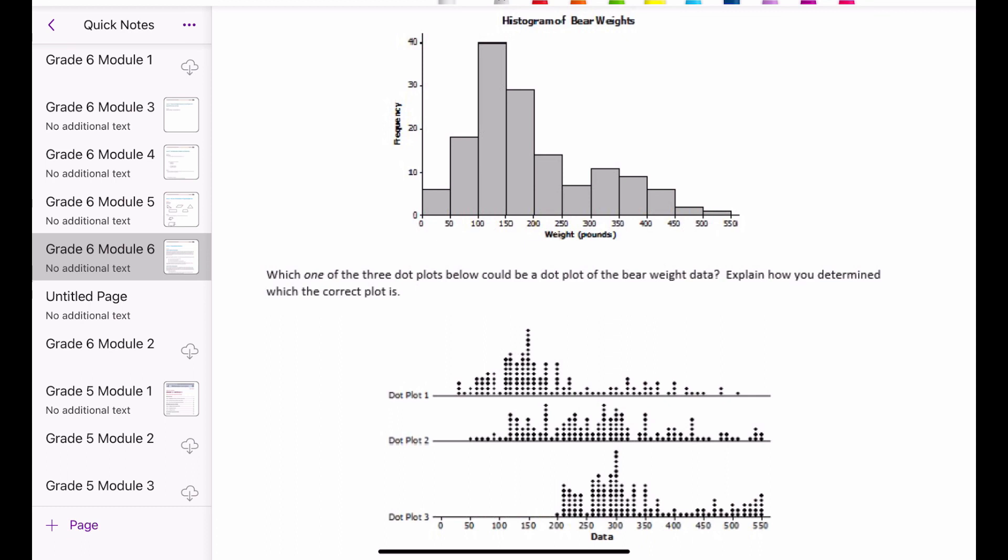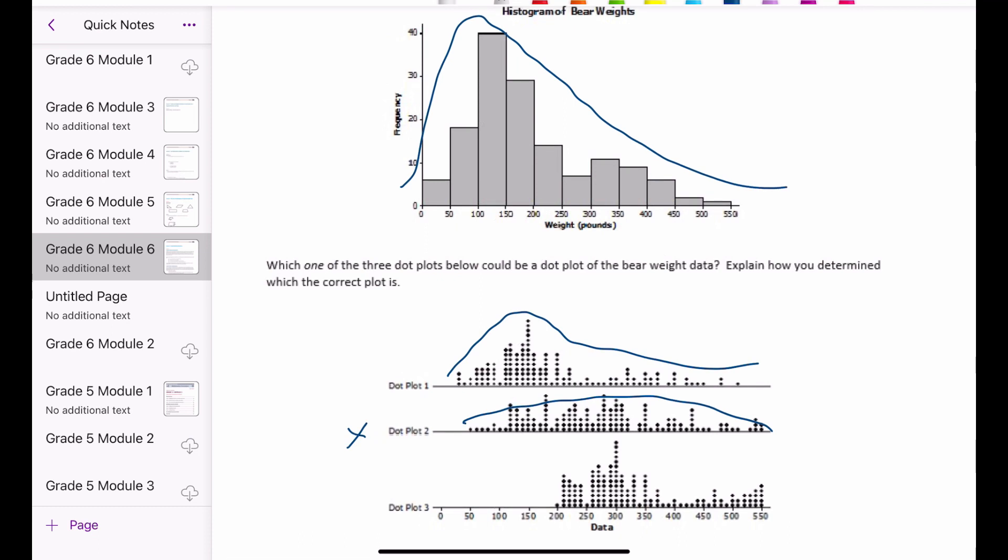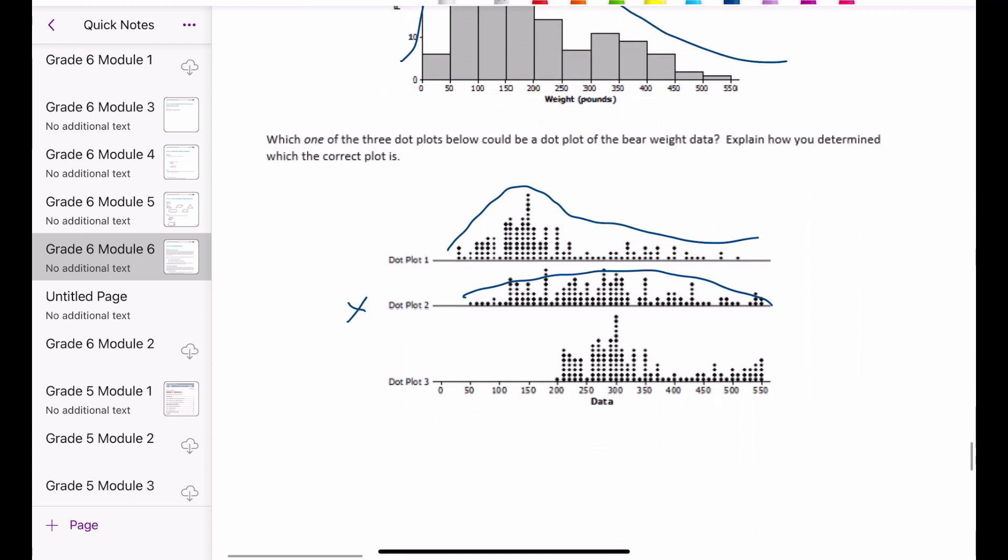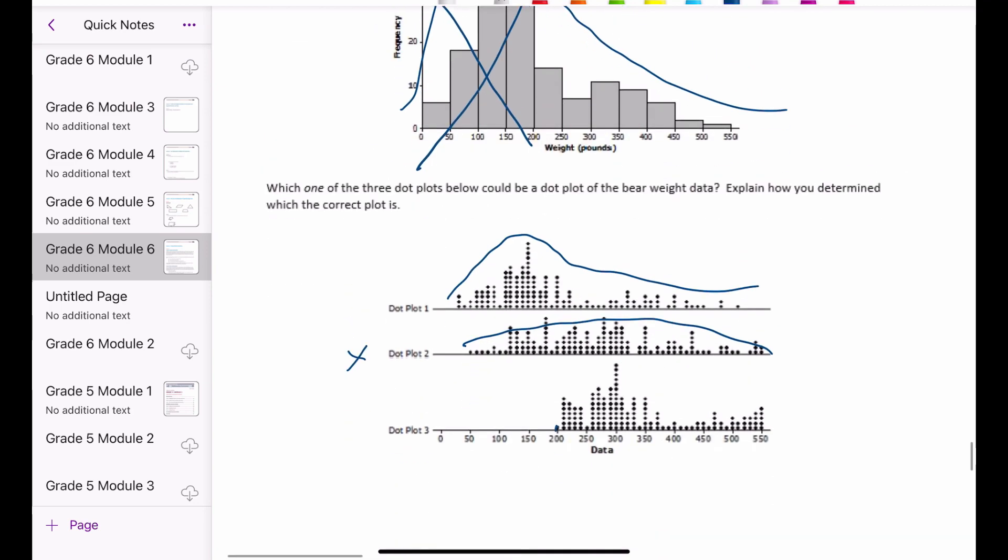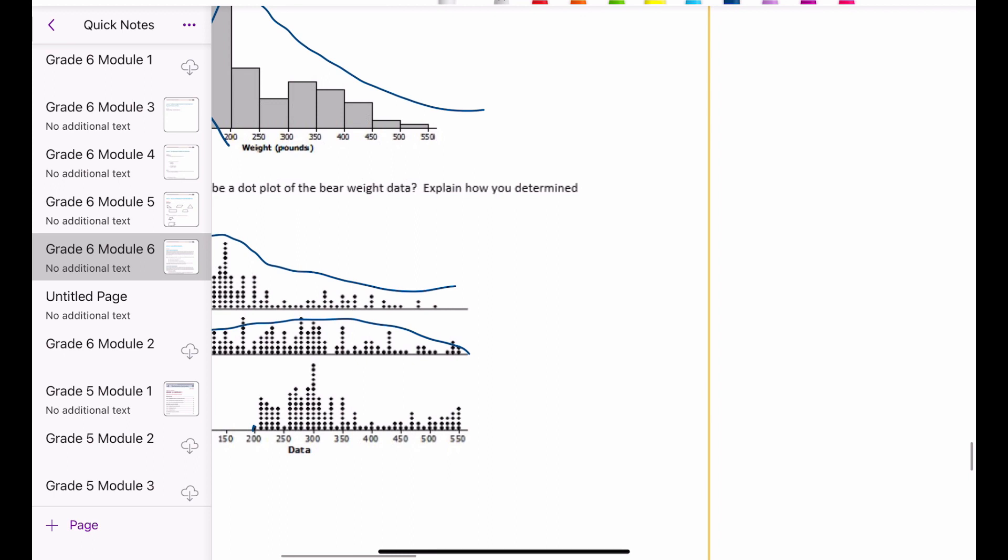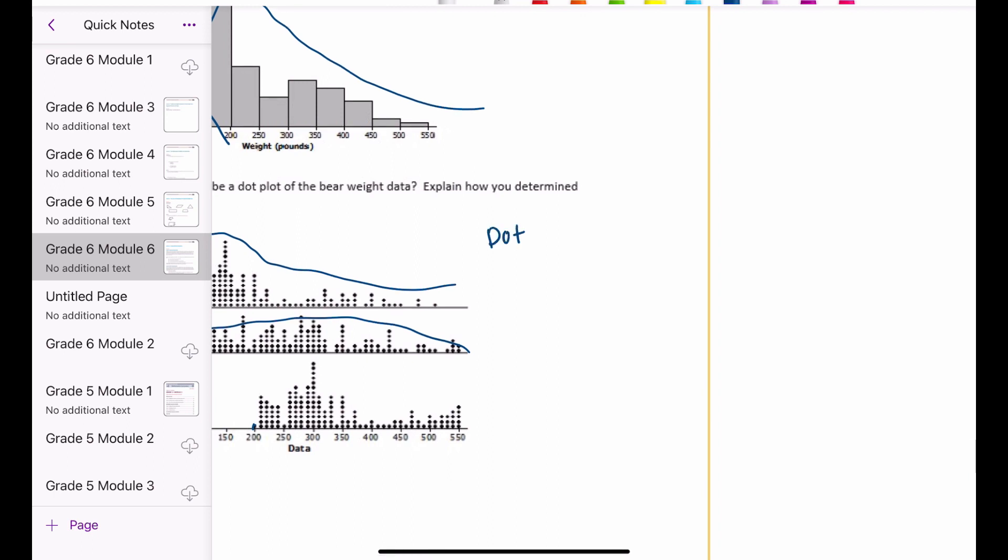It looks like the first one pretty follows the same kind of pattern there. I would say they're skewed similarly. I don't think dot plot two works because it's more symmetric than dot plot one. And dot plot three wouldn't work because the data doesn't even start until 200, so it skips out on everything over here. Dot plot three doesn't work. I'm going with dot plot one. Dot plot one is the correct choice.